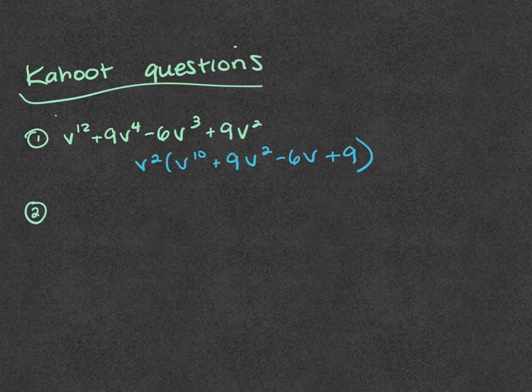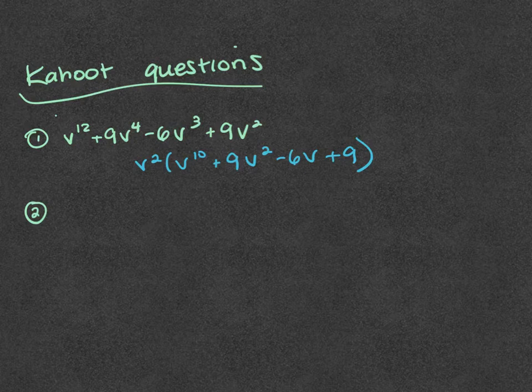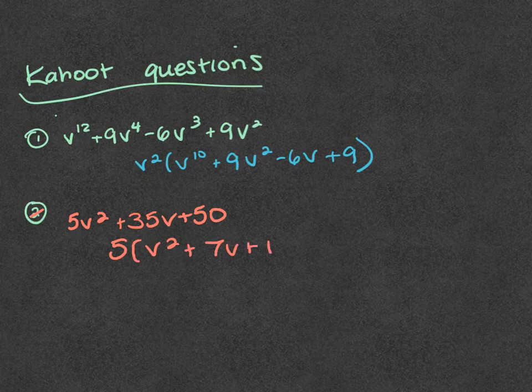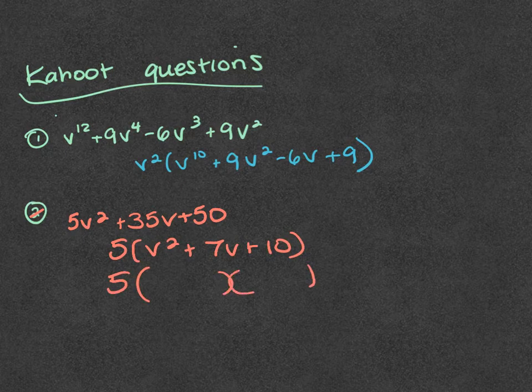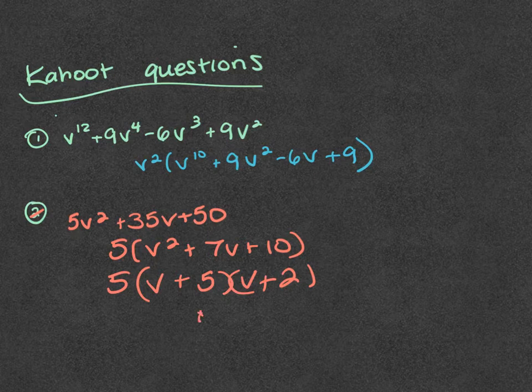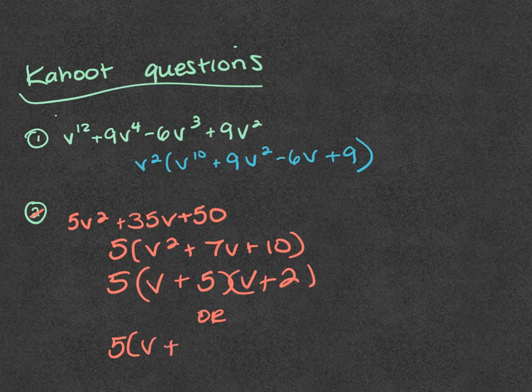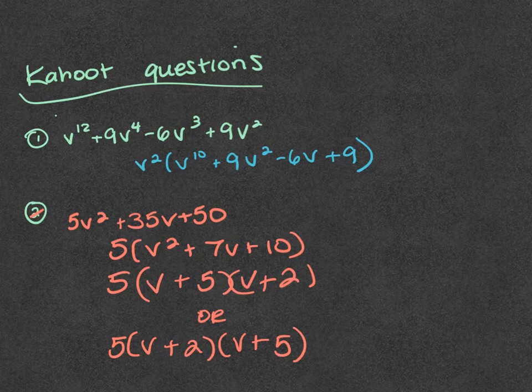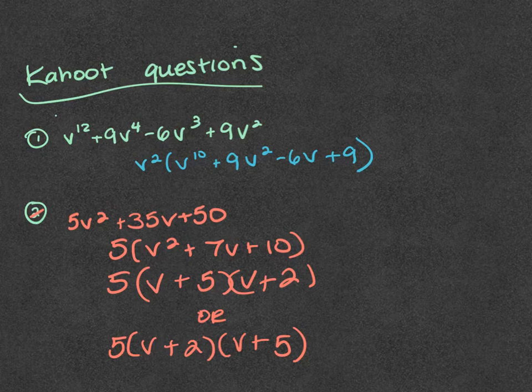Alright. Nicely done, Hunter. After you take out the 5, you get 5 parentheses v squared plus 7v plus 10, finding the factors of 10 that sum to 7, which are 2 and 5.